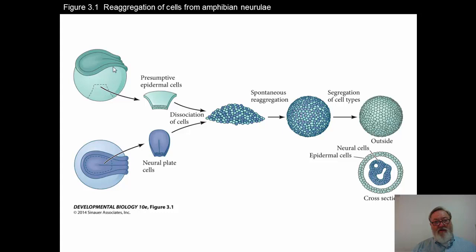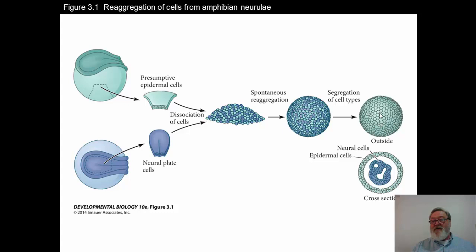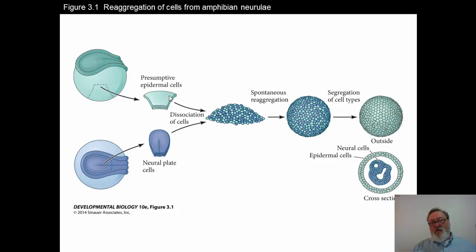He took presumptive epidermal cells from an albino embryo and neural plate cells from a pigmented embryo — these are amphibian, frog embryos — dissociated these cells, and then had them re-aggregate in such a way that they formed a ball. They then segregated further so that the non-colored albino cells were on the outside — the epidermal cells formed on the outside, just like in the embryo — and the neural tissue cells formed in the center. Holtfreiter and colleagues learned that you could dissociate cells by raising the pH; you raise the pH, the cells dissociate. You then mix them together, bring the pH back to normal range of about seven, and they will re-aggregate again.